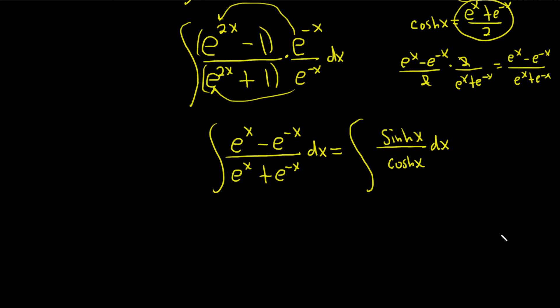So why is this better? Because now we can easily make a u substitution and not have to worry about the exponentials. We can use some hyperbolic knowledge. We can let u be equal to the hyperbolic cosine of x. And then du is the derivative of that. So that will be sinh of x dx. And that's precisely what we have in our integrand.